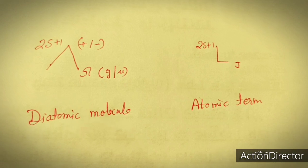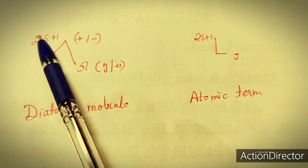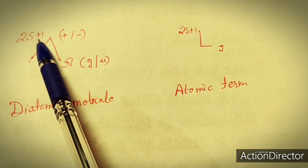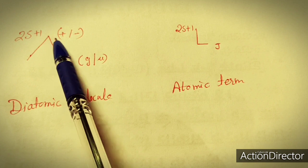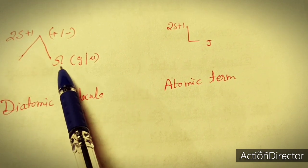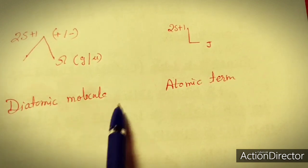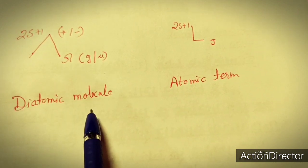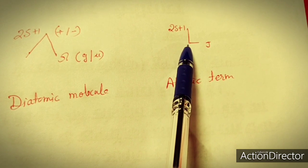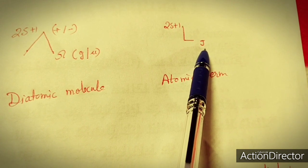A ground state term is represented as: the value of lambda as the symbol, 2S+1 as the superscript (multiplicity), plus or minus sign at the superscript position of lambda, and omega or G/U at the subscript. For atomic terms, the representation uses L, 2S+1, and J.